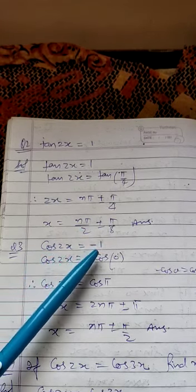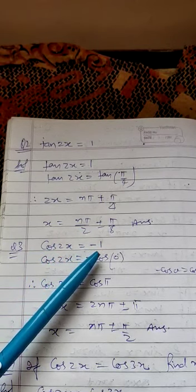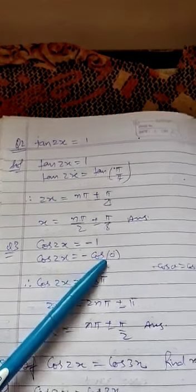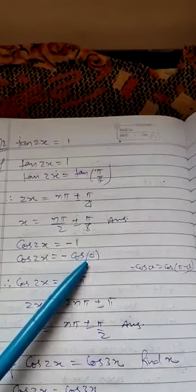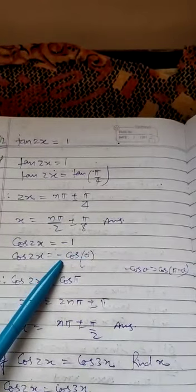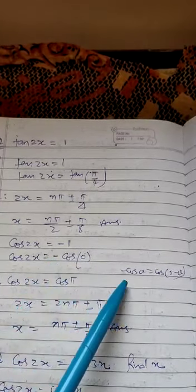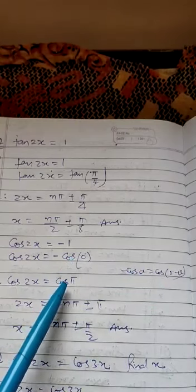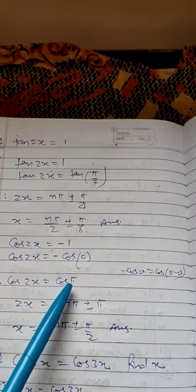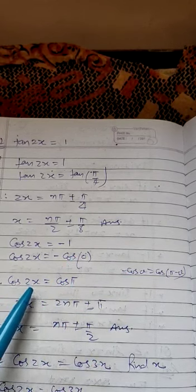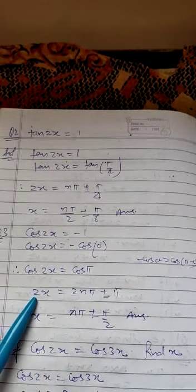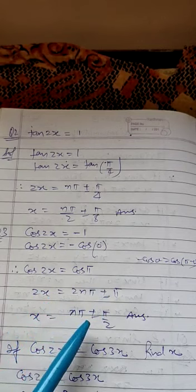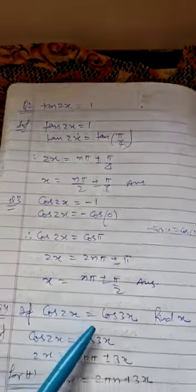Now take another question: cos 2x equals -1. We have to find the principal value of -1 in terms of cos. We know that cos 0° is 1. So this -1 can be replaced by -cos 0. Using the formula -cos θ equals cos(π - θ), this can be written as cos(π - 0), which equals cos π. Now apply the formula. So we will get 2x equals 2nπ plus minus π. Now divide the whole by 2, so we will get x equals nπ plus minus π/2. This is the full and final answer.